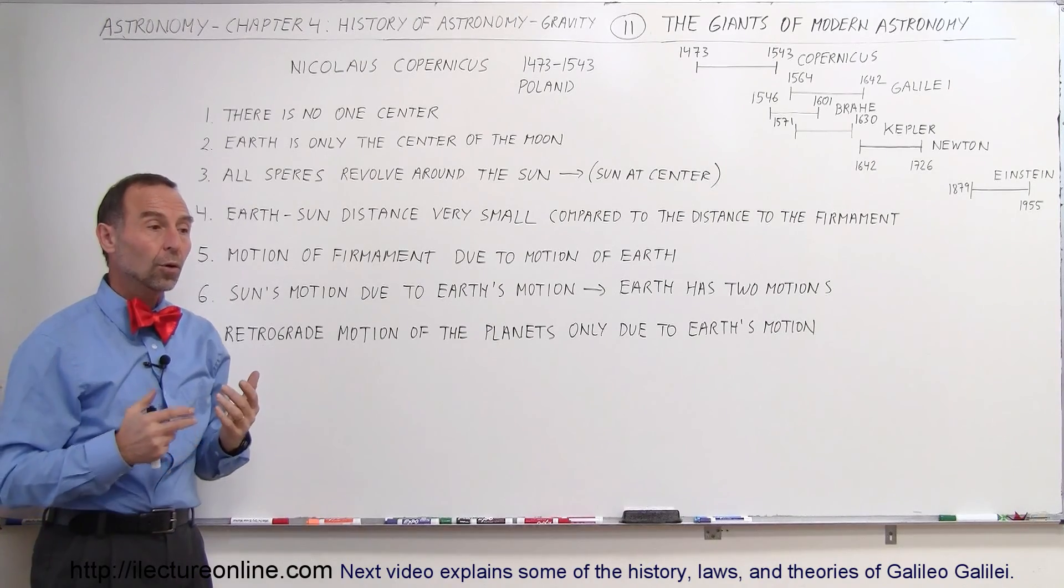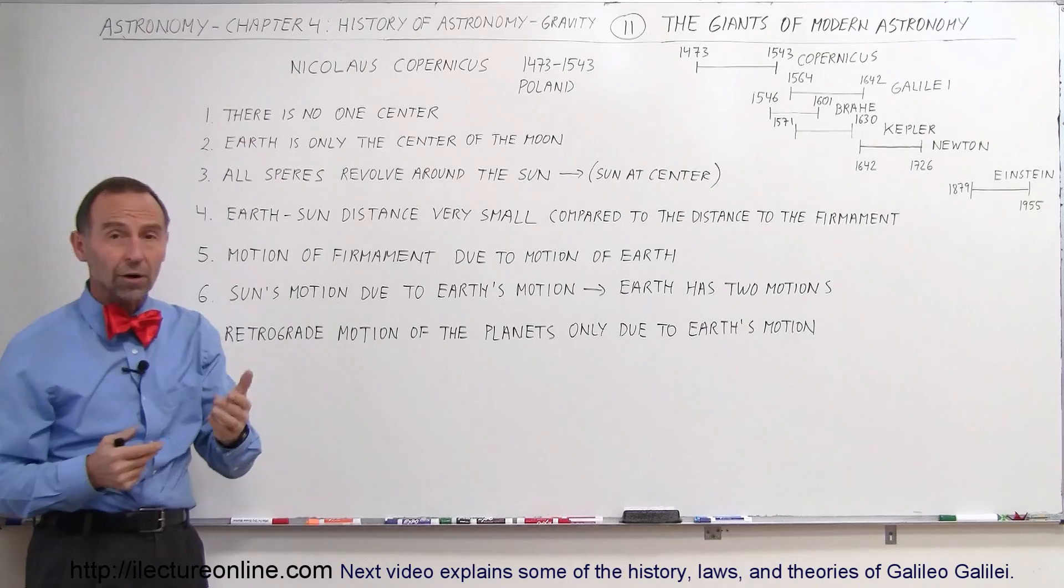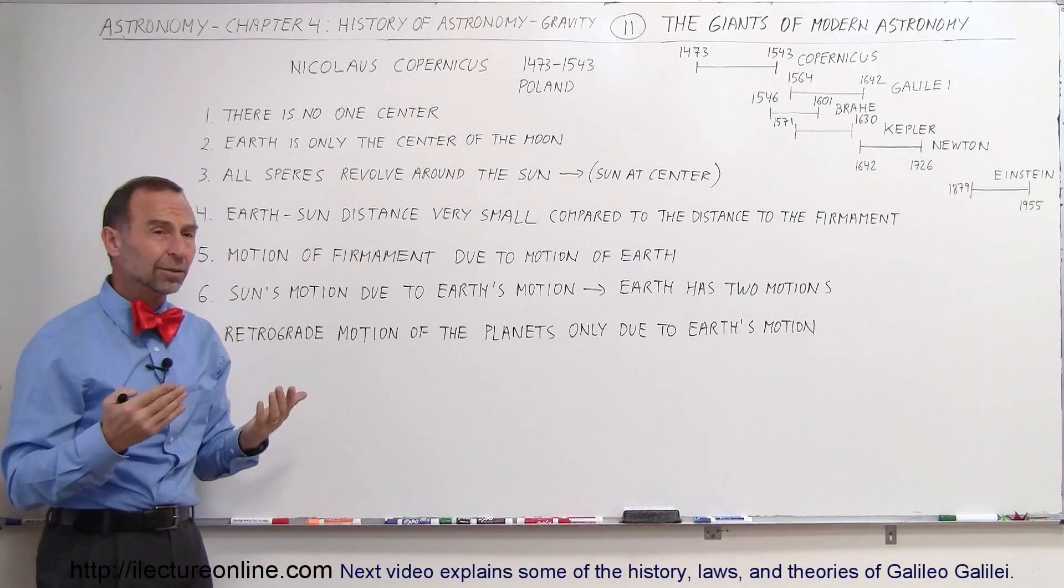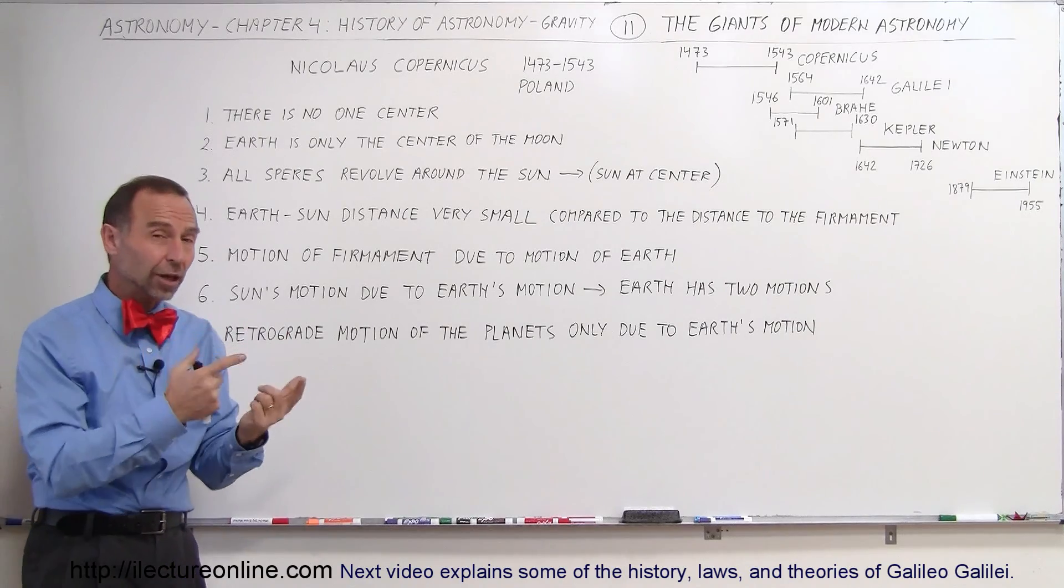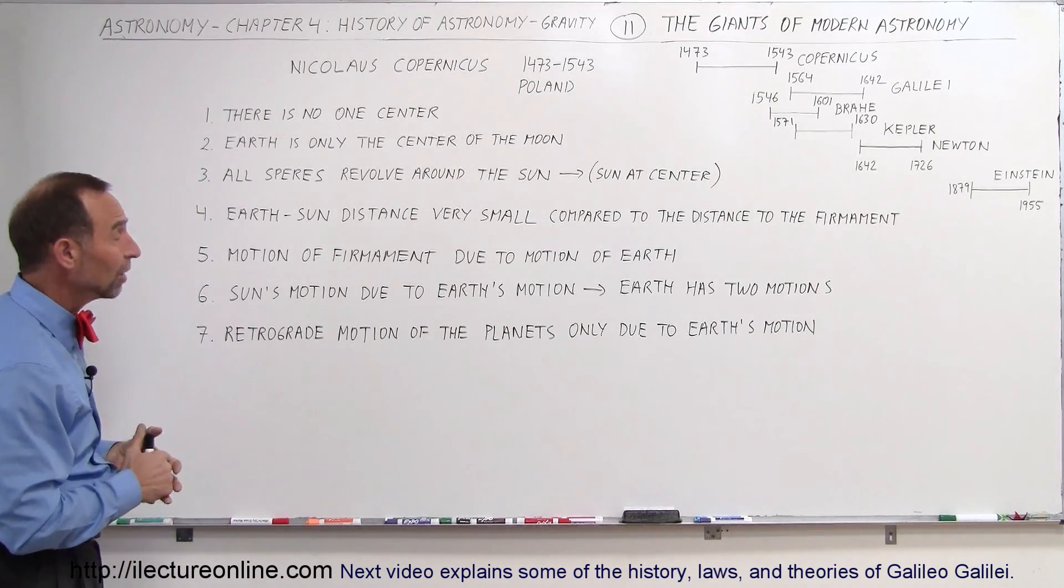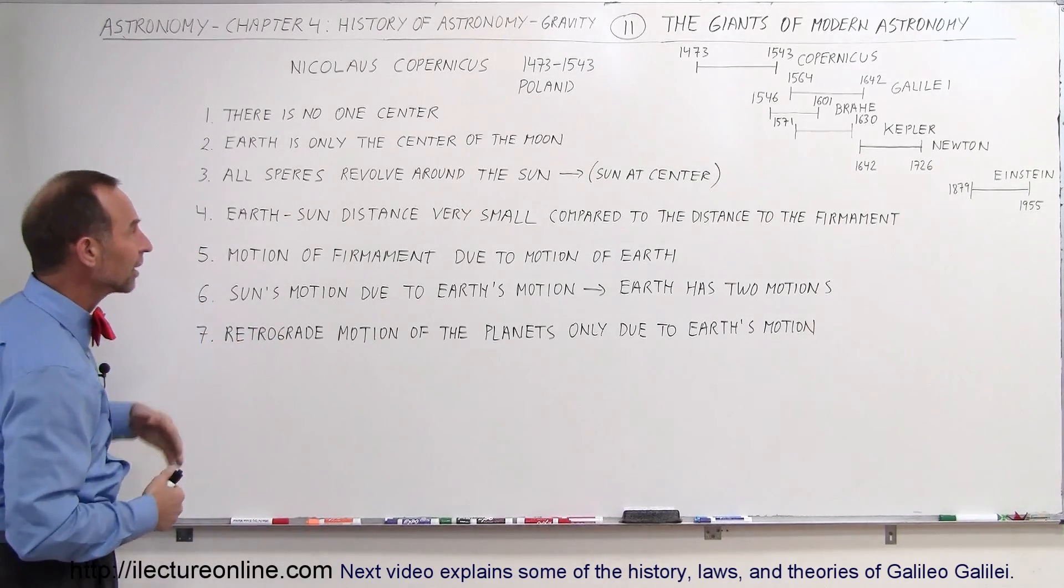Wow. So those spheres, the things that we see that were called Mercury and Mars and Venus and Jupiter and Saturn, those things, those spheres, they don't revolve around the Earth. They revolve around the sun. Wow. That is strange because we always thought that everything revolved around the Earth. It's not the case.